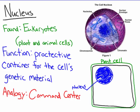The one that everybody thinks is the most important is the nucleus. This organelle is only found in eukaryotes — plant and animal cells. It is not found in prokaryotic cells. It is only a protective container for the cell's genetic material, which is just a fancy term for DNA. So the nucleus is the container for the DNA.